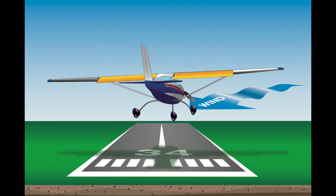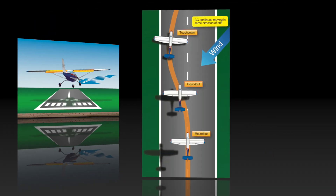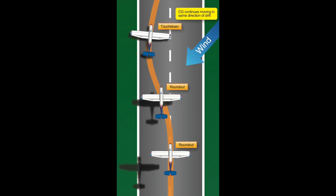This is a crab into the wind — wings level, turning your heading into the wind to have a straight ground track along the runway. It's a perfect crab. If you don't crab on a landing, with the nose pointed straight down the runway and wind coming from the right, the wind will blow you to the left. You have to crab to prevent that from happening.